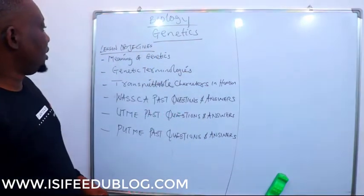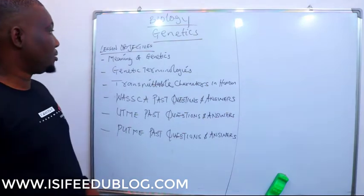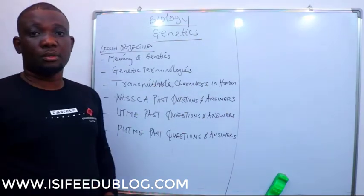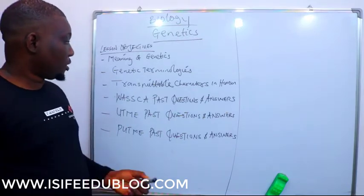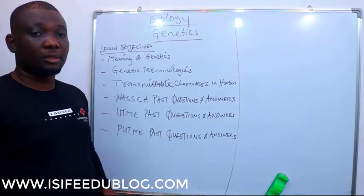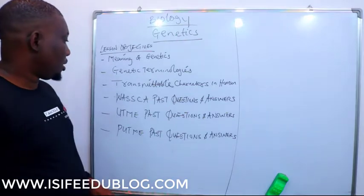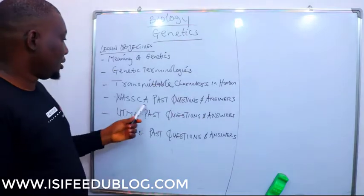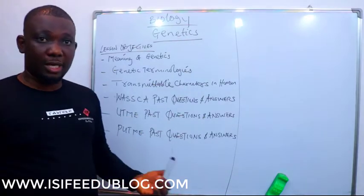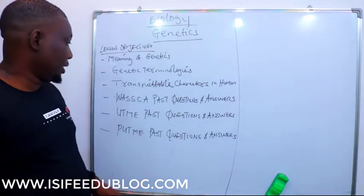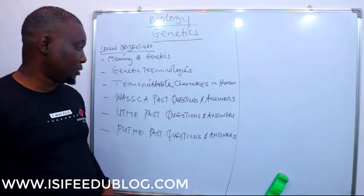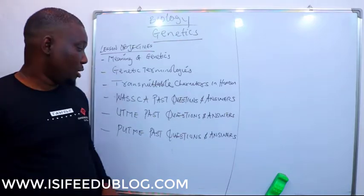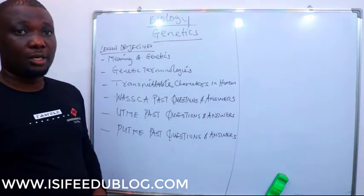We are going to start with the lesson objective: the meaning of genetics, what genetics is all about, and then we will look at the terms we use in genetics. We will also look at transmittable characters in humans and other animals. For past questions, follow the link where you have WAEC past questions and answers, UTME past questions and answers, and university post-UTME past questions and answers.